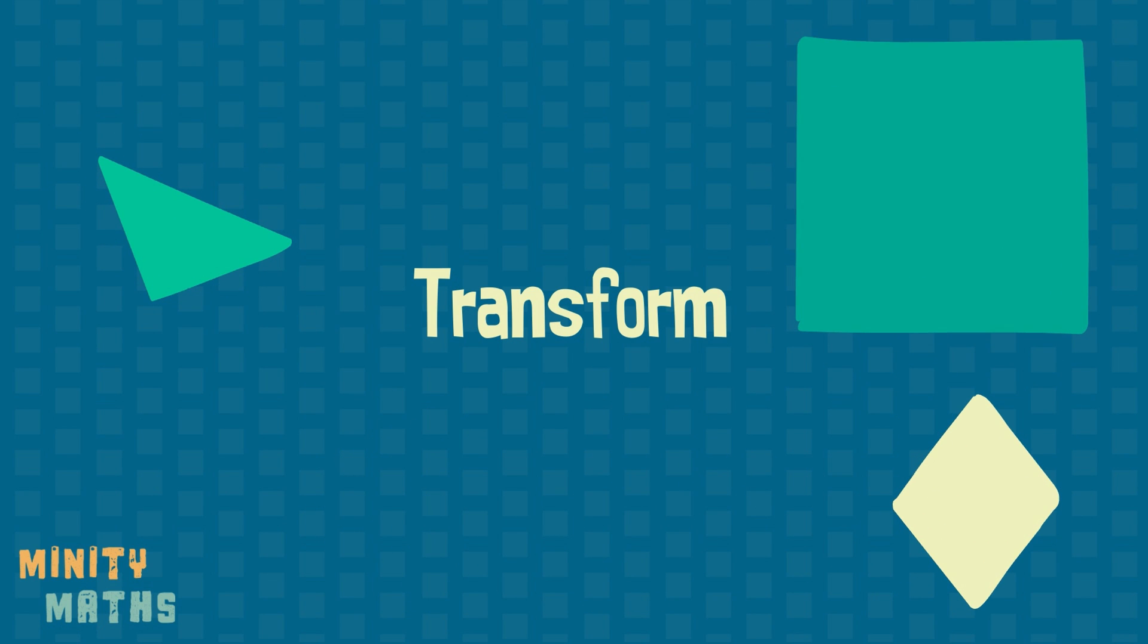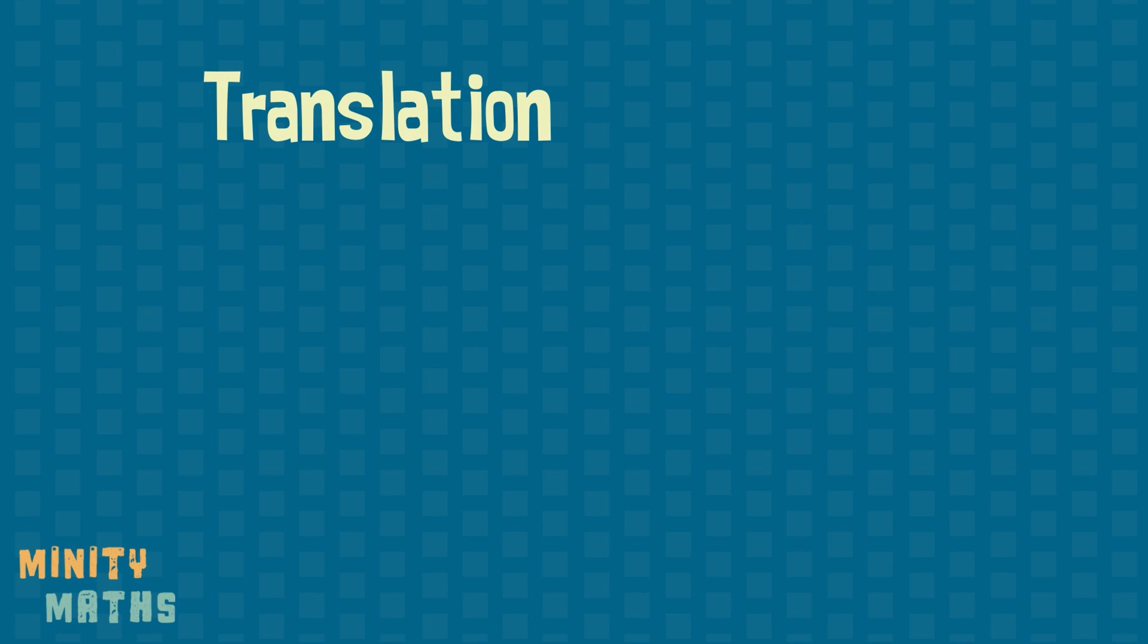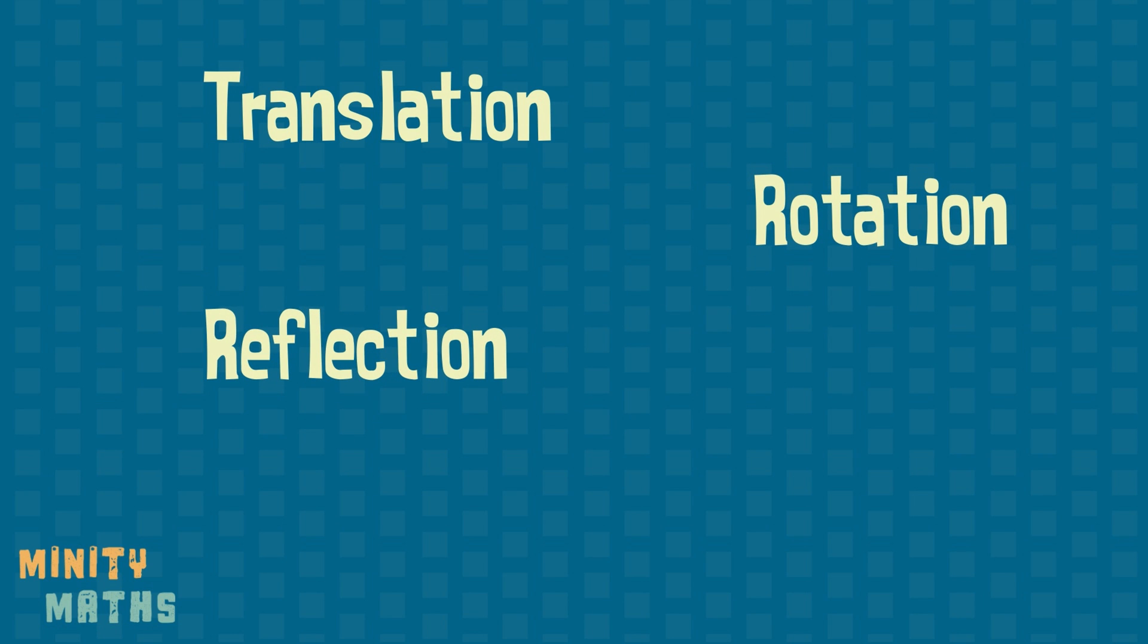There are four different ways we can transform a shape: translation, rotation, reflection, and enlargement.